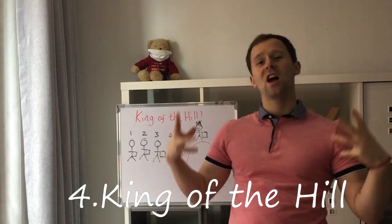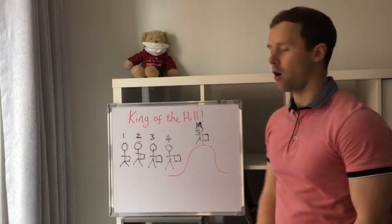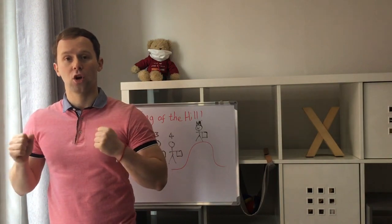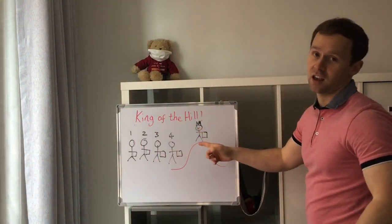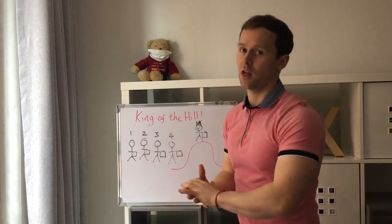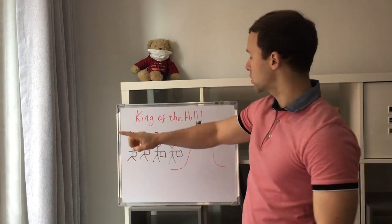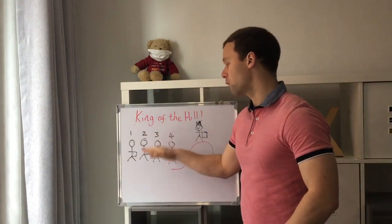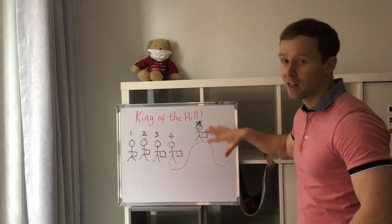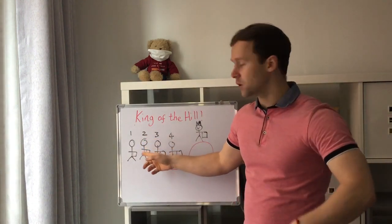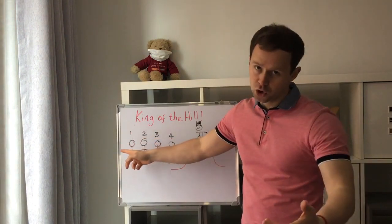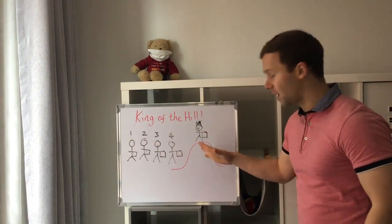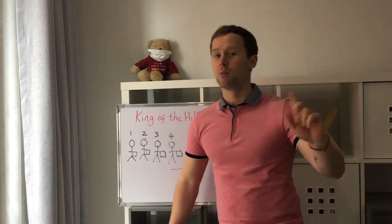Game number four is King of the Hill. First, you want to choose four or five students to come to the front. They're going to stand in a line with a flashcard or a question. The last student will be the king. Then you're going to choose one student to come to the front — they'll be the challenger. They'll go to the first student, ask them a question, and then play rock, paper, scissors. If they are the winner, they'll move on to the second student and keep going until they can challenge the king. If they get to the second student but lose, they'll change places with the third student. If they get to the third student and lose, they'll change places with the second student and so on. If they defeat the king, they will become the new king of the hill.